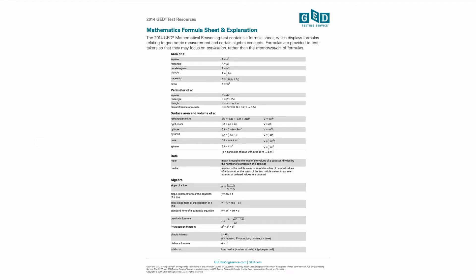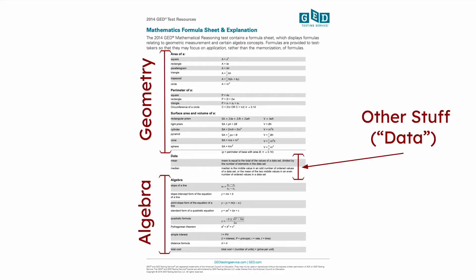Here it is — that is the formula sheet. You'll see that it's sort of organized: geometry stuff is at the top, algebra stuff is at the bottom, and there's this data stuff in the middle. If you're noticing it says '2014 GED test resources' at the top, that doesn't mean it's out of date — they revised the whole GED in 2014 and we're still using that revision. So until they update it, this is what they use.